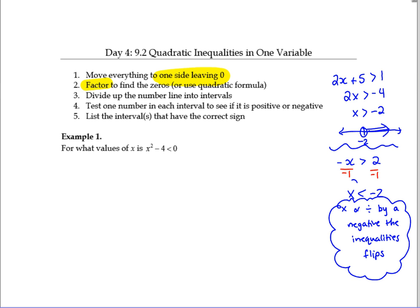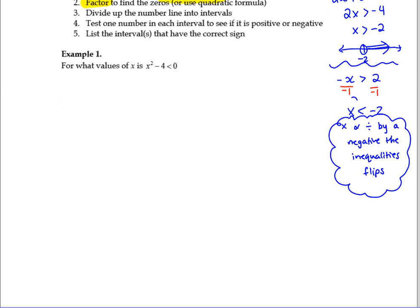From there, we need to do a test, interval test, and I'm going to help show you how to do that. Okay? So this guy already has one side equal to zero, so we can go to factoring. What does that factor to? X minus 2 and X plus 2. Okay?